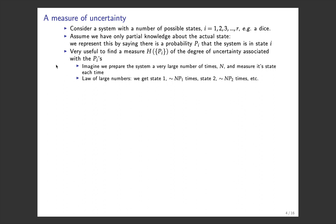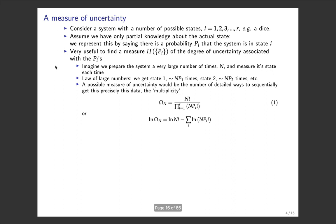Imagine we prepare the system a large number of times — we throw the dice N times and look at what we get. The law of large numbers tells us we should get state 1 approximately N times P1, state 2 N times P2, et cetera. A possible measure of uncertainty is the number of ways to sequentially get exactly this data — the multiplicity. This multiplicity omega_N equals N factorial divided by the product of (N p_i) factorials. We then take the logarithm: log omega_N equals log N factorial minus the sum over the logs of (N p_i) factorials.